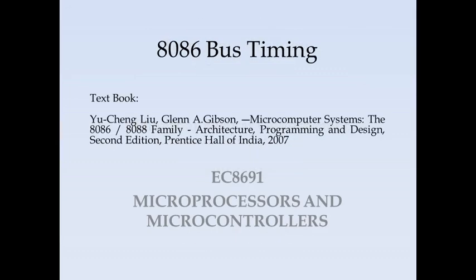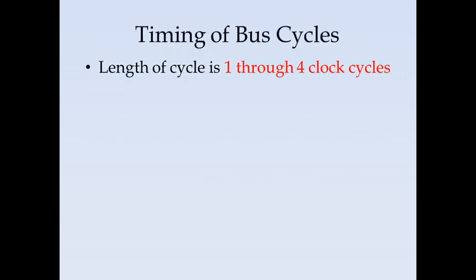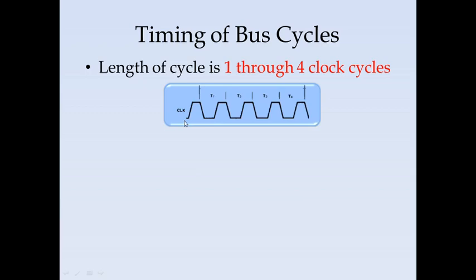In this video we will see the 8086 bus timing for the bus cycles. A bus cycle is the transaction for a read or write, and the timing involved is called the bus cycle. The length of a cycle is one through four clock cycles, represented by T1, T2, T3, and T4 — four T-states or four clock cycles.